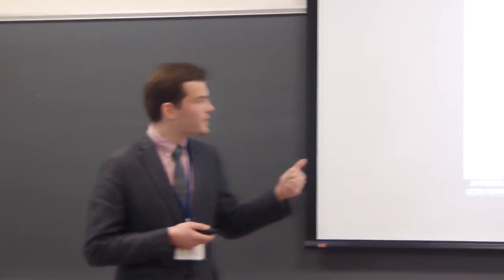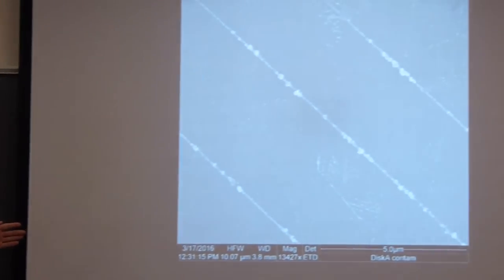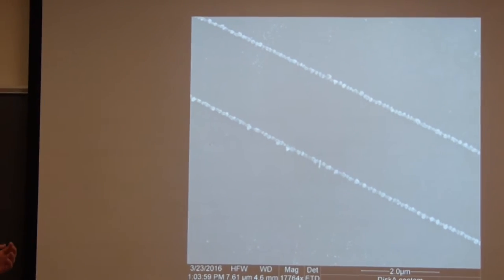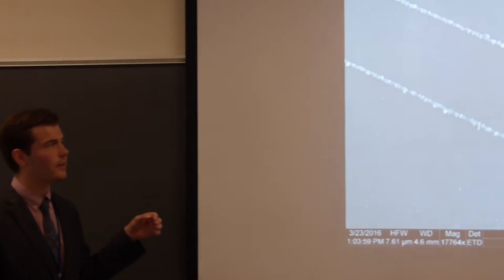And here's a scanning electron microscope image up close of some wires. We took this just a few weeks ago. Here's another one. We can change the size of the wires by varying the deposition times and other factors in the growth process. And then, here's some larger wires. These are the ones that are roughly about 100 nanometers. The others are a little smaller.